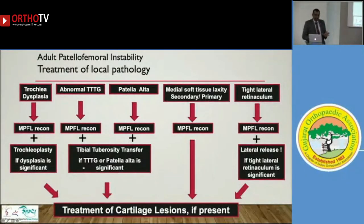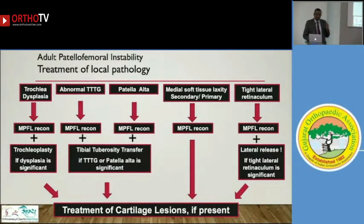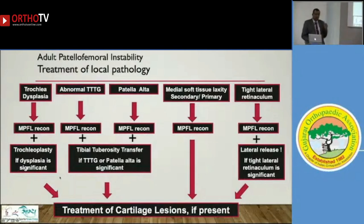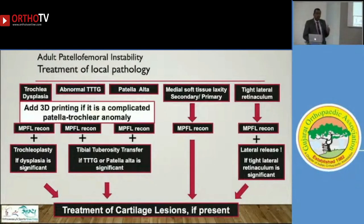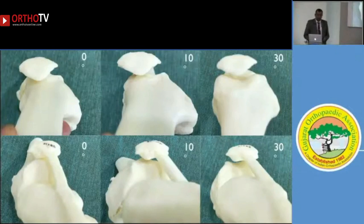So what helped? This is my methodology: depending on the cause of pathology, since the MPFL is not the culprit but the victim, I always associate my surgeries with MPFL reconstruction. But if there is too much trochlear dysplasia or tibial tuberosity abnormality, I add trochleoplasty or tibial tuberosity transfer. The key lesson: if there is significant patellar-trochlear abnormality — especially in complicated cases — it is better to do 3D printing of the patellar-trochlear joint in different degrees of flexion, as it gives insight into how the patella is entering the trochlea and provides information that can help patients who have undergone multiple failed surgeries. Thank you very much.